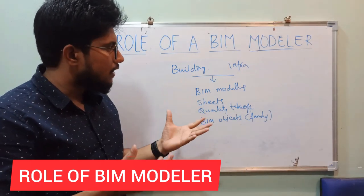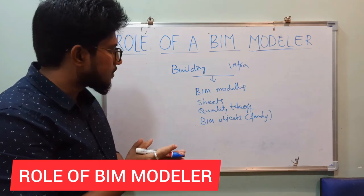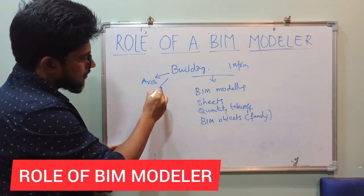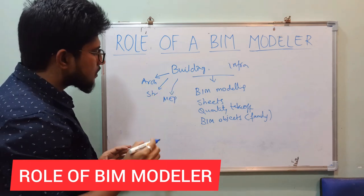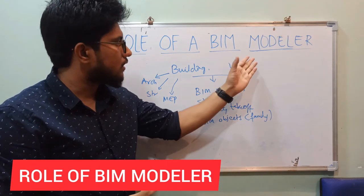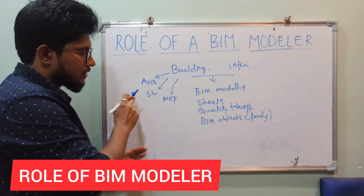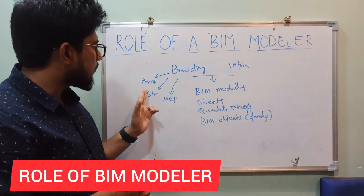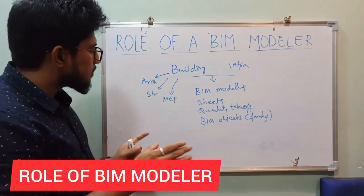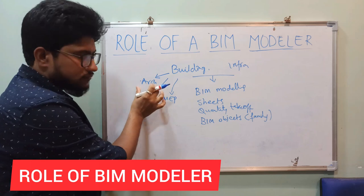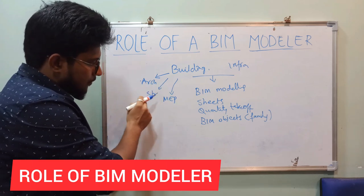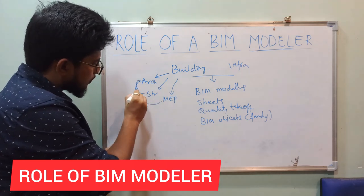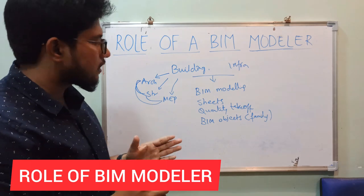You need to do BIM modeling of a building or infrastructure. In building projects, there are at least three disciplines: architecture, structure, and MEP. Companies may ask you to work on one discipline — architecture, structure, or MEP — or a combination of two or all three. This depends on the company and project. If you are a mechanical engineer, they will expect you to work on MEP; if you are an architect, they will expect architecture work.